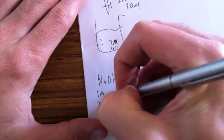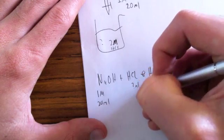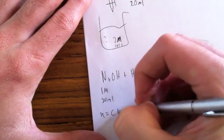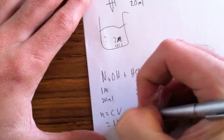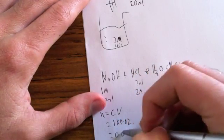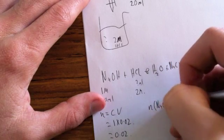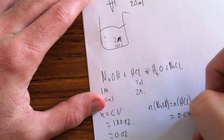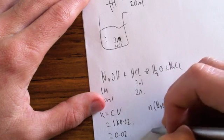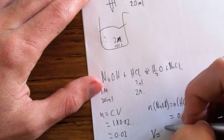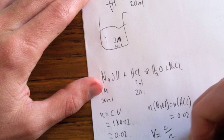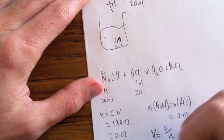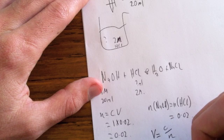1 molar, 20 ml, unknown ml, 2 molar. So we got number of moles equals C times V equals 1 times 0.02 equals 0.02. Number of moles of NaOH equals number of moles of hydrochloric acid, therefore number of moles of hydrochloric acid is 0.02. Therefore, volume equals concentration over number of moles equals 0.02 over 0.02 equals 1.